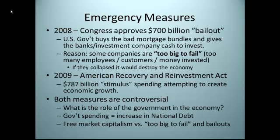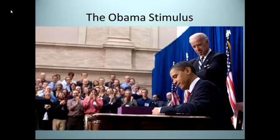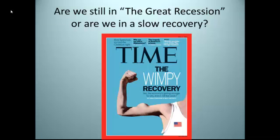The third reason it's controversial is the idea of free market capitalism, in which companies rise and fall — if a company fails, it fails and another takes its place — versus this idea of too big to fail and bailouts. There are people who argue that no company is too big to fail, that that is our economic system of capitalism, and others who say we simply can't have the large impact that one of these companies failing could have. The Obama stimulus — the American Recovery and Reinvestment Act — went into place in 2009. But as we sit here today, the question remains: are we still in the Great Recession, or are we just in a very slow recovery?